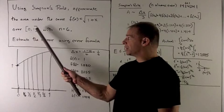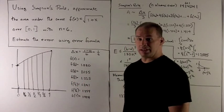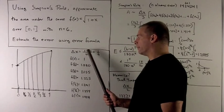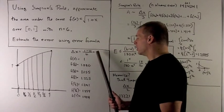So we're going to take the interval 0, 1, chop it up into 6 pieces. So my delta x is going to be 1 minus 0 divided by 6 or 1 sixth.